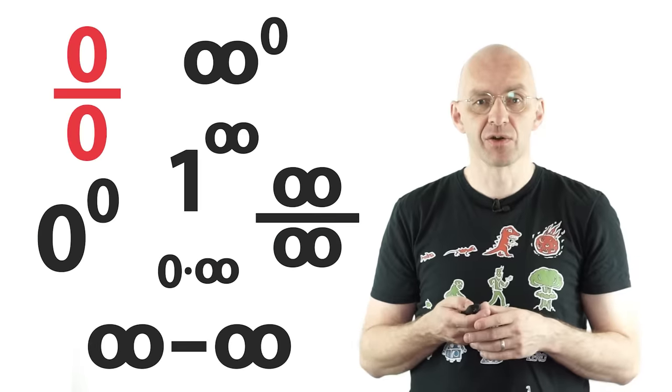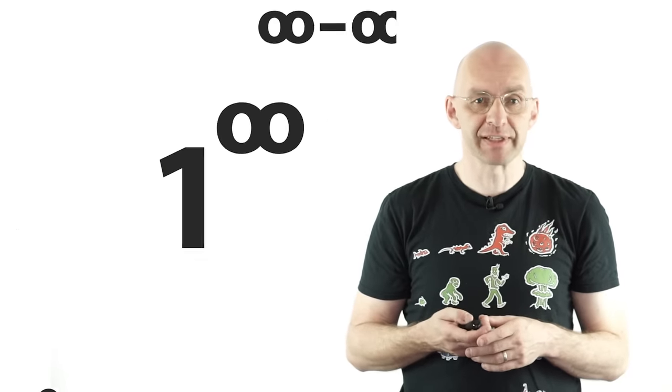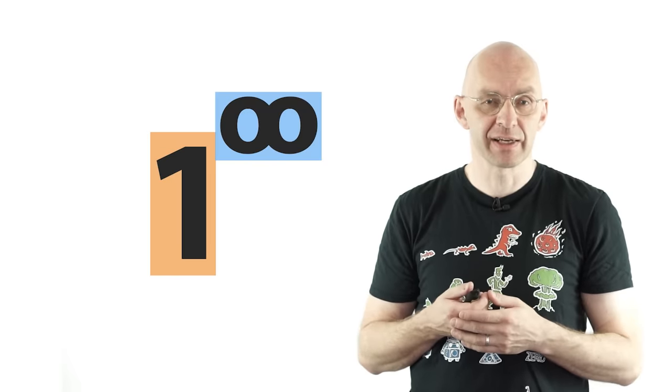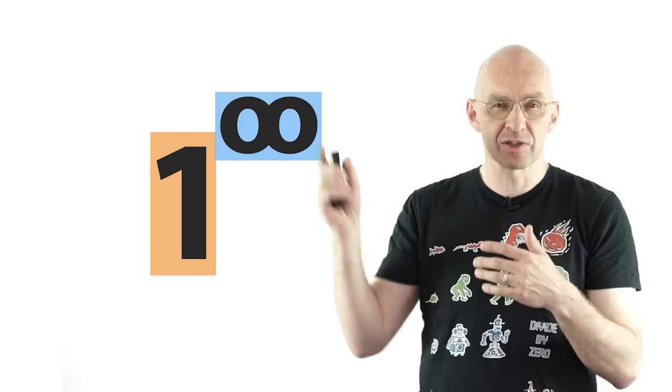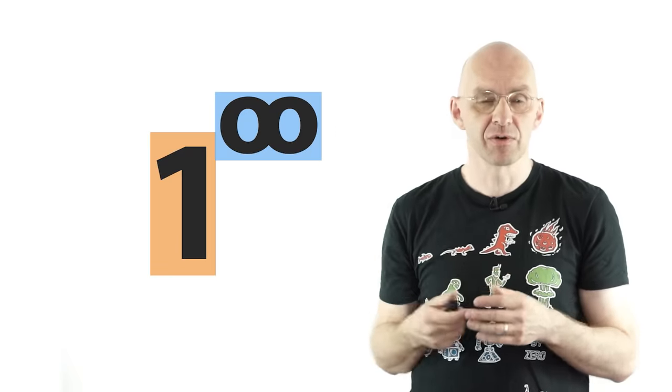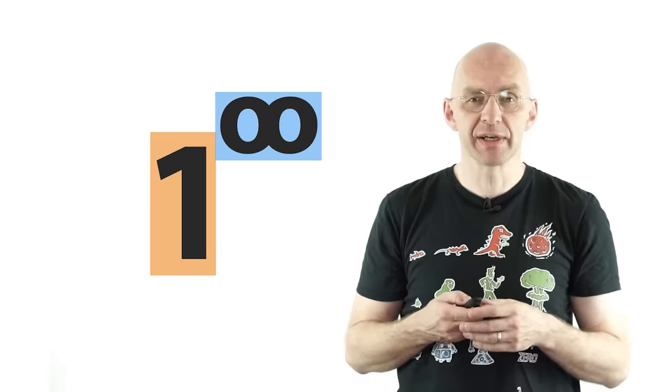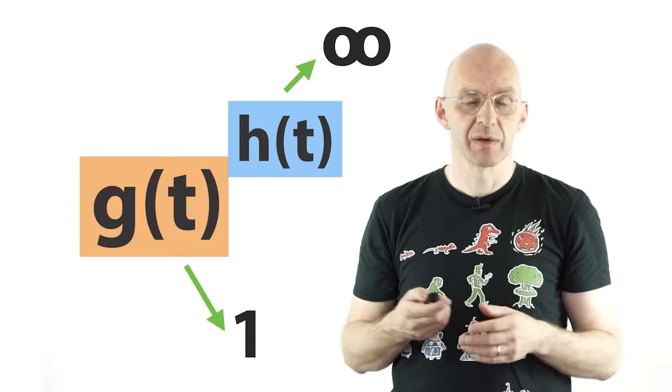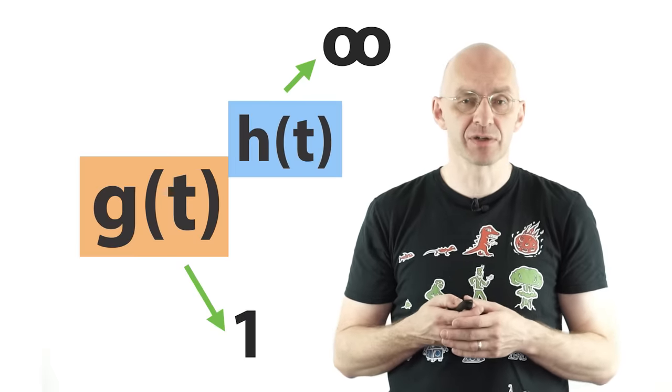So let's just have a look at an example, one to the power of infinity. So infinity, I don't really have to say this, in elementary calculus never stands for anything like a number. It always stands for some sort of function or process that goes to infinity. The same sort of thing here, both one and infinity actually stand for functions. The first one approaches one, the second one approaches infinity as t goes to a critical value.